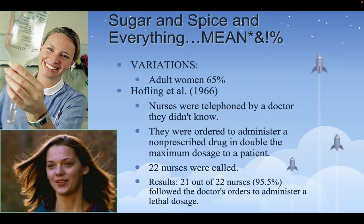The Milgram experiment was really an experiment about obedience. When repeated with other subject configurations around the world, the percentage of people willing to shock the victim to the maximum was between 61% and 67% — about two-thirds of all people were willing to be obedient. Adult women got the same results — 65%. In 1966, Hoefling and colleagues found that 21 out of 22 nurses — 95.5% — followed a doctor's orders to administer a lethal dosage of drugs to a patient, even though they didn't know the doctor.